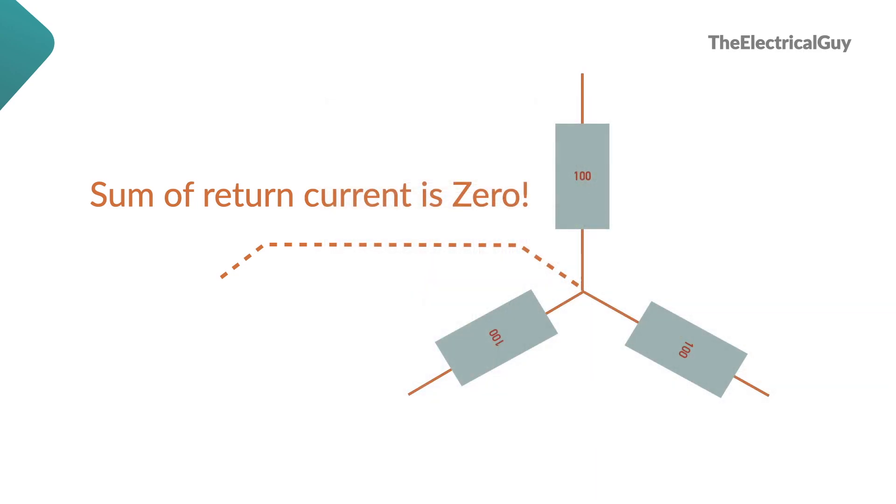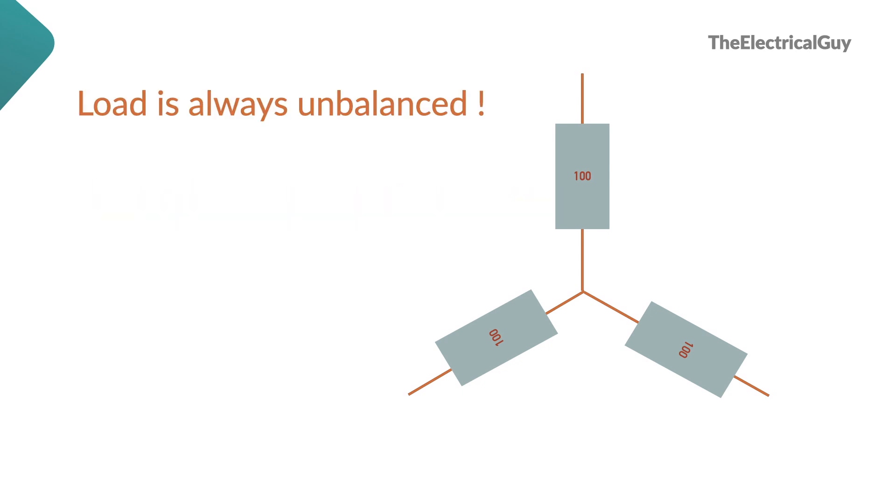To understand floating neutral, you must know why neutral is necessary. When the load is balanced, current flowing through neutral is zero, and we can even remove the neutral wire. But this situation is not practical in distribution systems. In distribution systems, the load is always unbalanced, and that's when neutral comes into picture.